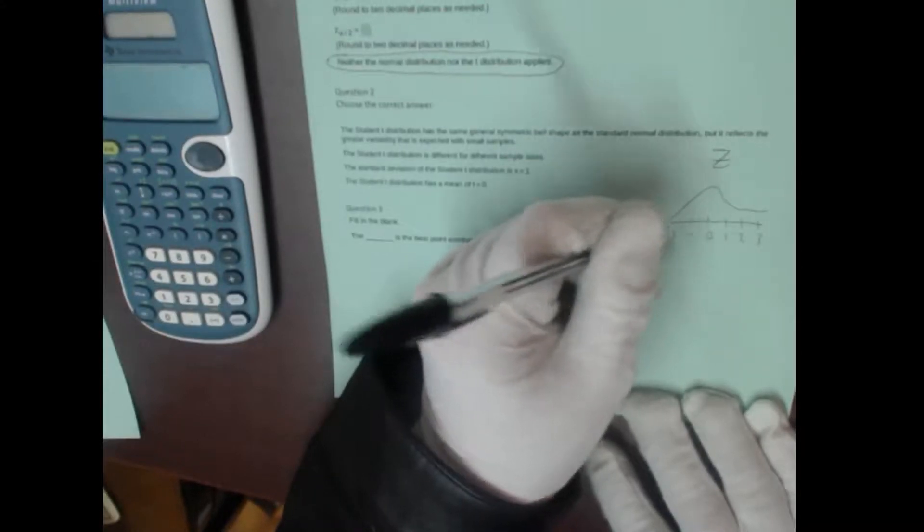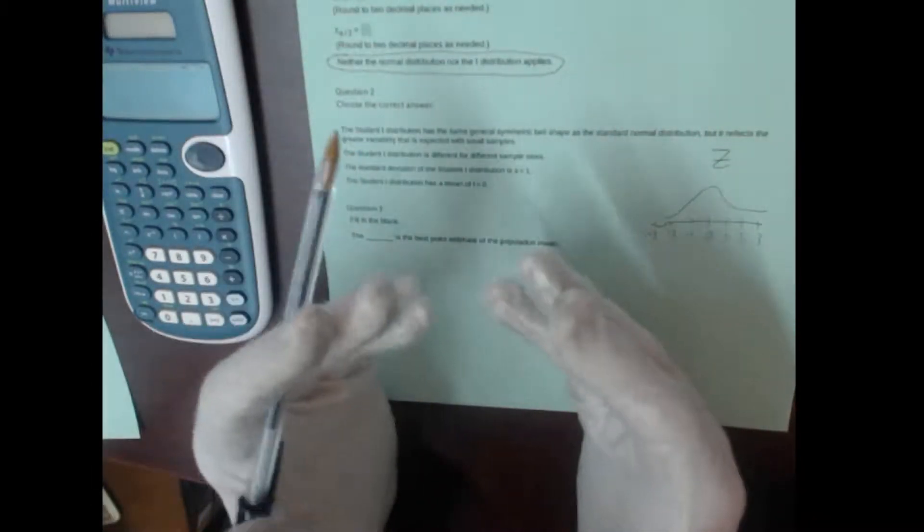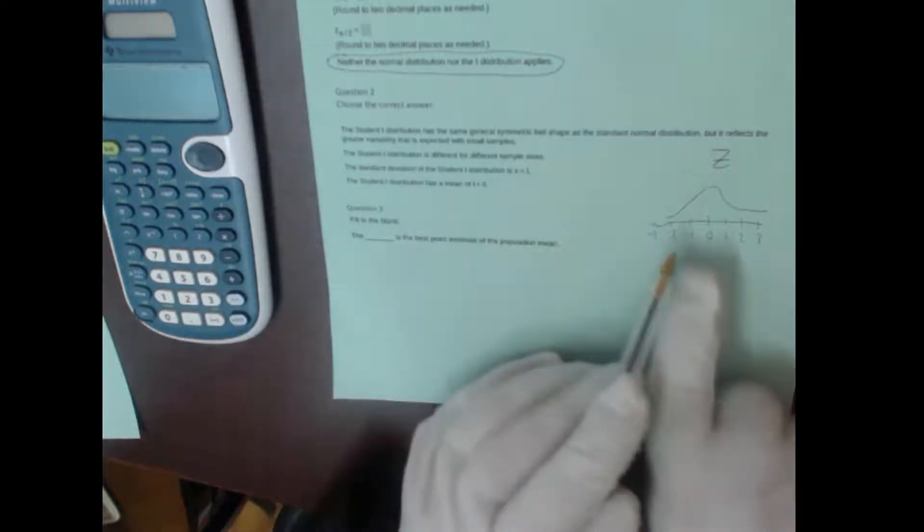That's your standard normal distribution that we already talked about a bit. t is a little bit different. The t bell curve actually changes based on how big your sample size is. And the bigger and bigger your sample size, the closer and closer it gets to being like the z standard deviation, but it does vary a little bit based on how big your sample size is.